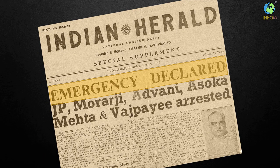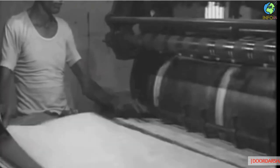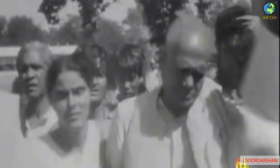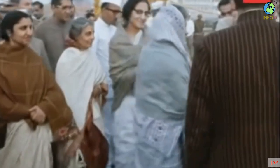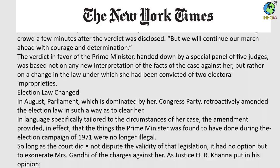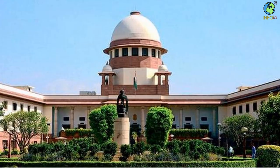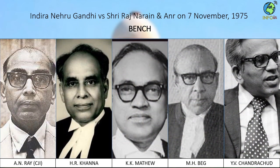During the Emergency, several main opposition leaders including Raj Narayan were arrested, the press was censored, organizations were banned, a large number of new laws were enacted, and most importantly, all fundamental rights with the exception of the right to life were suspended. In August, the parliament, dominated by Indira's Congress, amended the election laws in such a way so as to clear her of wrongdoing. The New York Times reported that the amendment provided, in effect, that the things the Prime Minister was found to have done during the election of 1971 were no longer illegal. The Indian media at that time was heavily censored with only reports favorable to the government allowed to publish. On 7th November 1975, the Supreme Court of India overturned the decision of the Allahabad High Court and cleared Mrs. Gandhi of all election fraud charges.